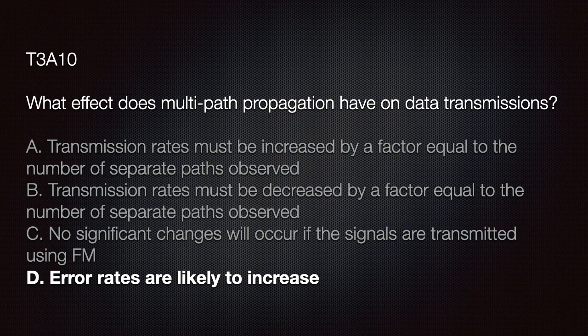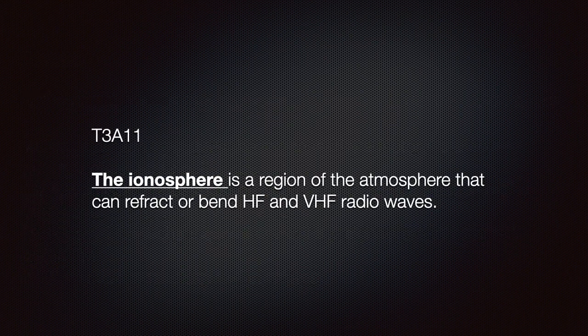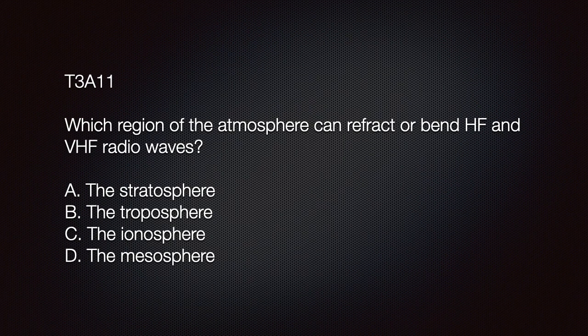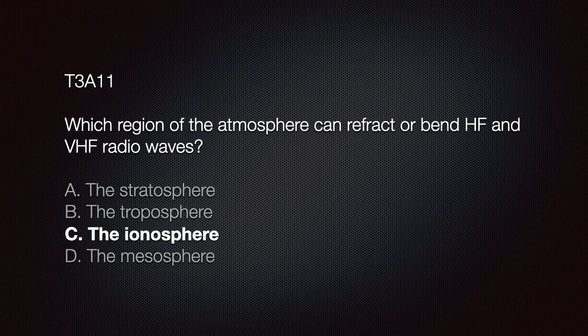For the exam, you should know that the ionosphere is a region of the atmosphere that can refract or bend HF or VHF radio waves. The ionosphere is an area between 30 and 260 miles above the Earth, filled with ions — hence its name. HF and VHF waves bounce off the ions and allow for long-distance communications. The exam question asks which region can refract HF or VHF waves; the correct answer is C: the ionosphere.